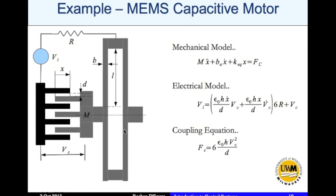The electrical model is given by: vi = (epsilon*h*x_dot / d) * vc + (epsilon_0*h*x / d) * vc_dot * 6R + vc. The factor of six accounts for the six capacitors in parallel. Vc is the voltage across the capacitor, x is the common distance between the plates, epsilon is the permittivity of free space, h is the depth, and d is the distance between the plates.